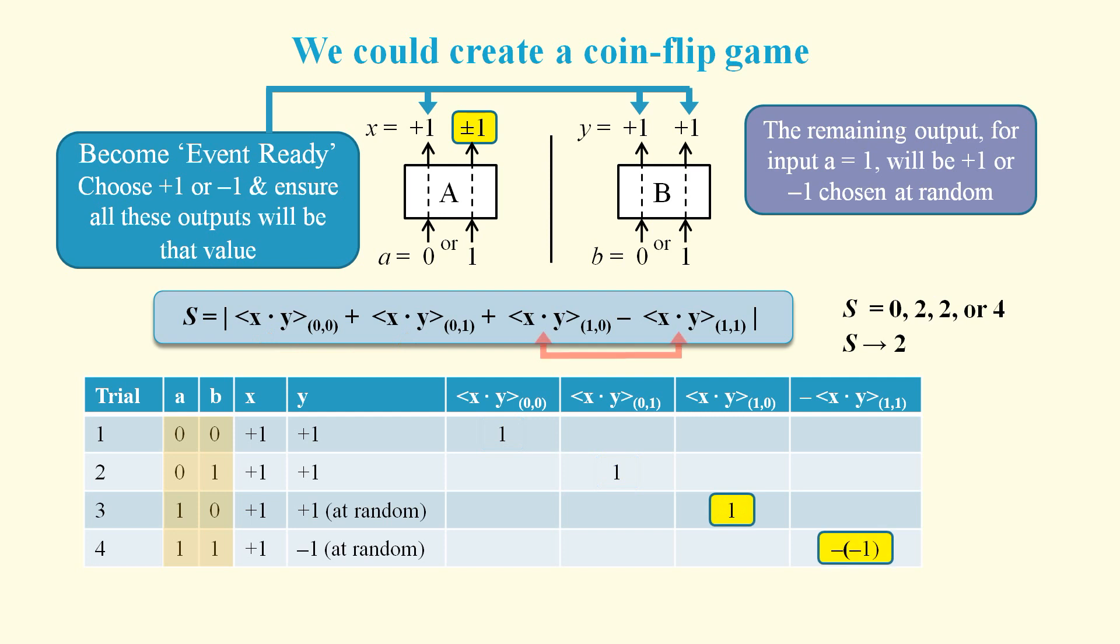But the third and fourth trials include the random output on the Alice side, and if we get these particular results then we get an S value of 4.